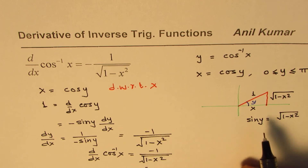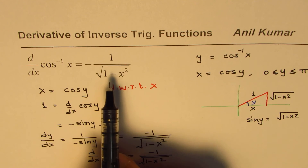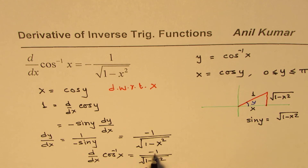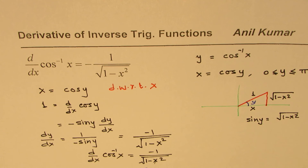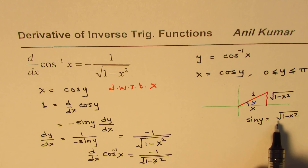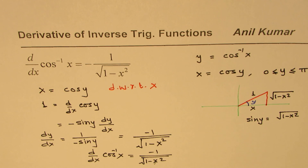You'll find that the derivative of cos inverse x is always negative. That is how we can find the derivative of cos inverse x, and that is a background on the inverse function itself. I'm Anil Kumar, and I hope that helps. Thank you and all the best.